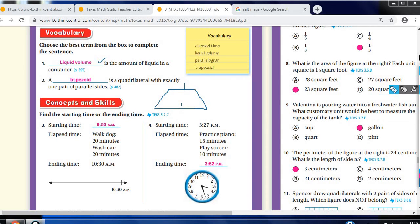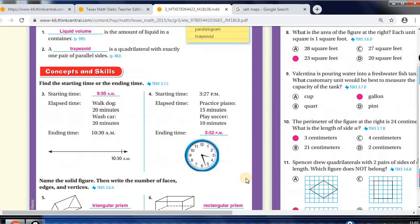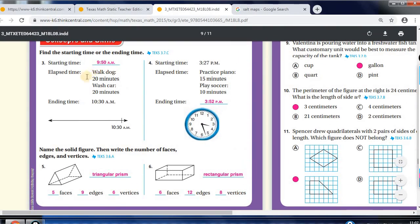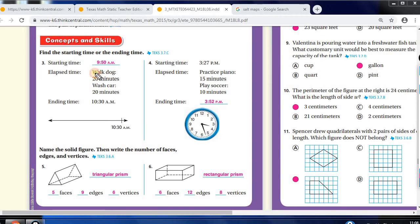We have another time question. A couple more time questions. You work those out the same way we did. So, you need to find the starting time or ending time. So, they give you the elapsed time. Walk dog for 20 minutes. Wash car for 20 minutes. And they end it at 1030. So, you add these. That's 40 minutes. From 1030 to 10, that's 30 minutes. Now, you got to go back another 10 and that takes you to 950. So, they give you the starting time. They want to know the ending time. Starts at 327. And practice for piano for 15. Play soccer for 10. We add these two. We get 25. And then we add it to the starting time. And that gives us 52. And it's 352.